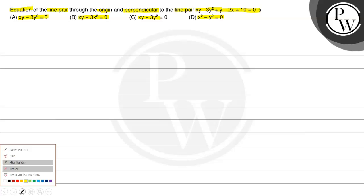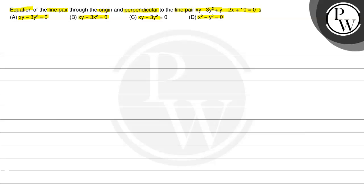तो बच्चो इसके लिए हम लोग key concept पर आते हैं और उसके बाद हम लोग देखते हैं कि question कैसे solve करते हैं। सबसे पहले question क्या कह रहा है — हमें ऐसे line pair का equation चाहिए जो origin से pass होता है, यानि x=0 पर y=0, और साथ ही दिए हुए pair of equations, जो 2 degree का equation है, उस पर वो line perpendicular है।